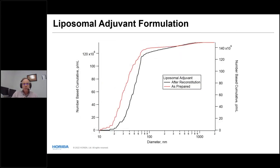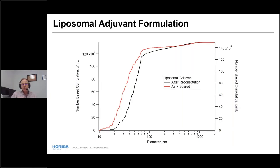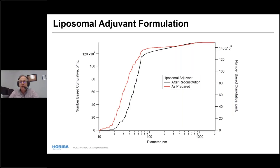Somewhat similar to viruses are adjuvants. This is a liposomal adjuvant formulation — red shows the as-prepared sample, and after lyophilization and reconstitution the size distribution shifts to the right toward larger particle sizes. So even freeze-drying as a form of stress can be faithfully tracked with nanoparticle tracking analysis.